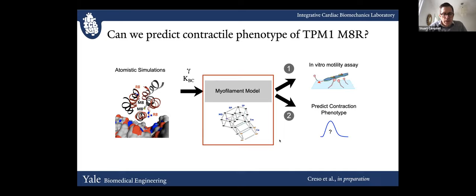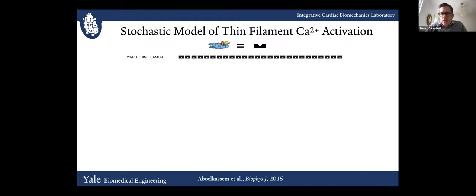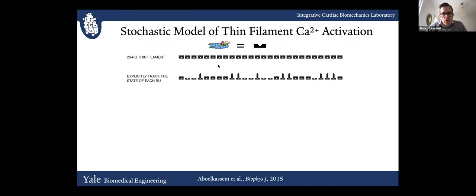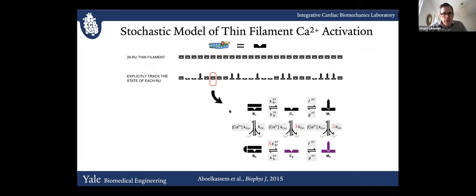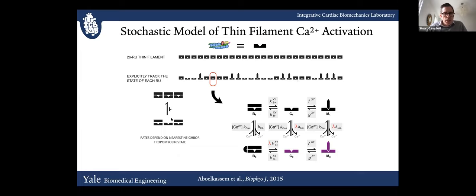This model dates back to my graduate work at UCSD with Andrew McCulloch, where we came up with the idea of a stochastic representation of the cardiac thin filament as a series of interlinked regulatory units. We explicitly track the regulatory state of each regulatory unit and account for nearest-neighbor interactions between them. In a 2015 update, we began considering additional states of the thin filament that include stochastic activation even in the absence of calcium binding. The reason we need an entire thin filament with 26 regulatory units is because of tropomyosin-tropomyosin overlap that causes regulatory units to tend to switch between states in concert.